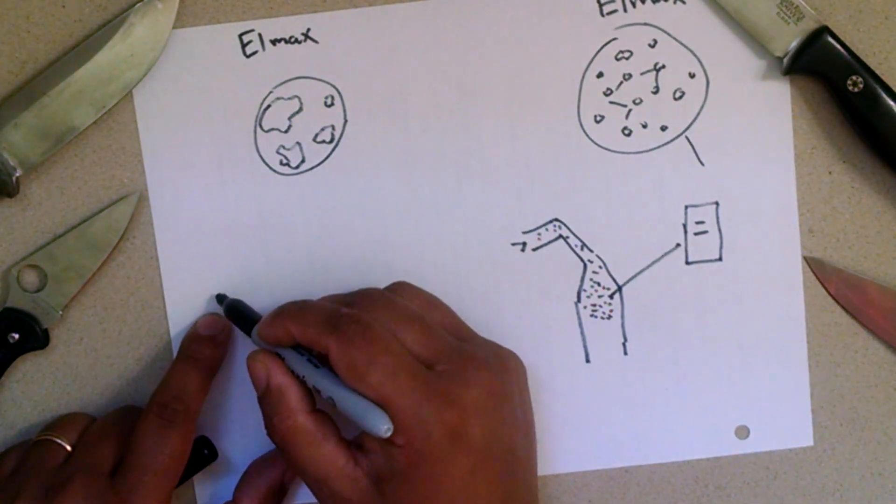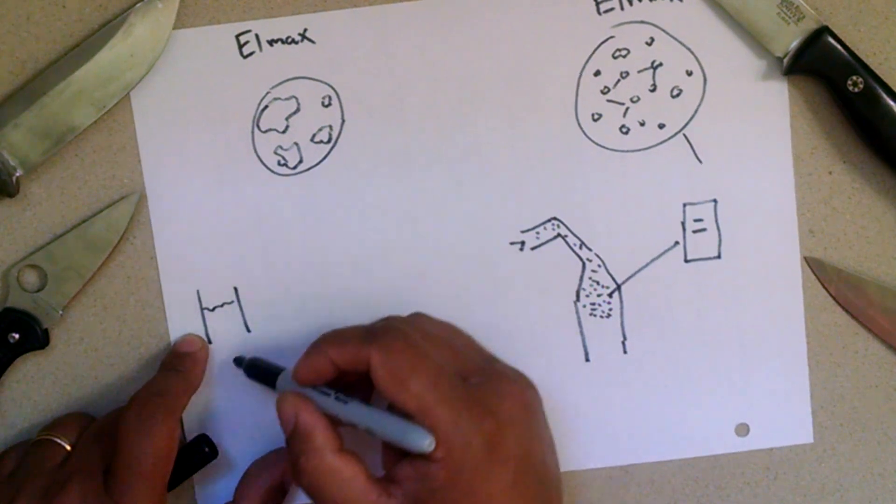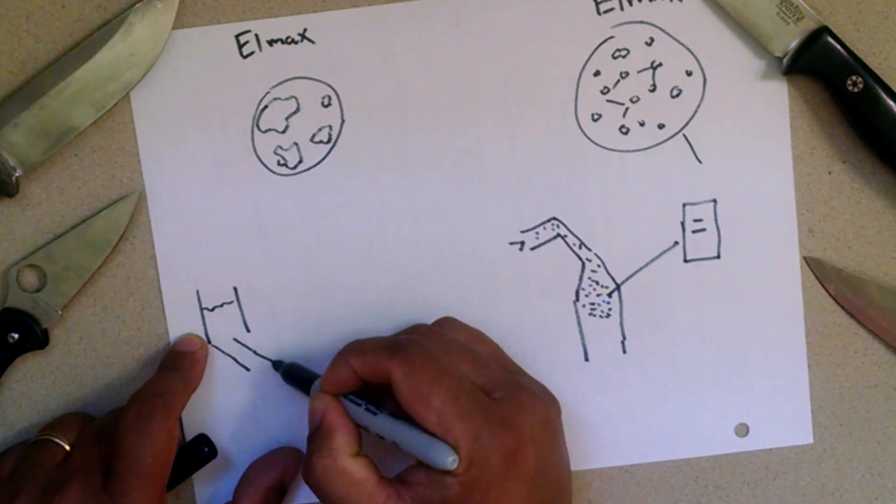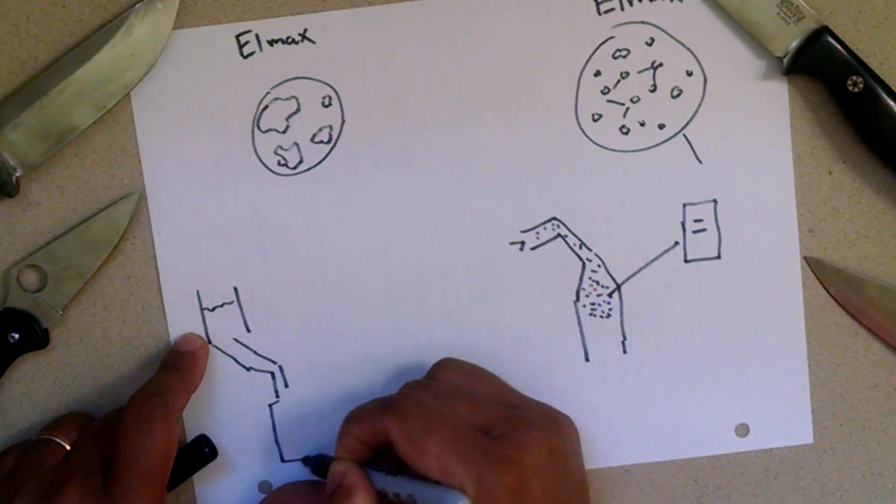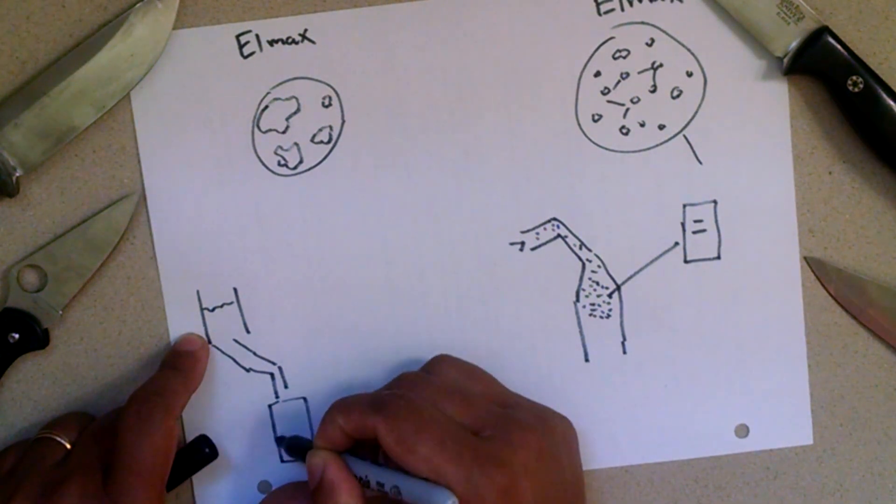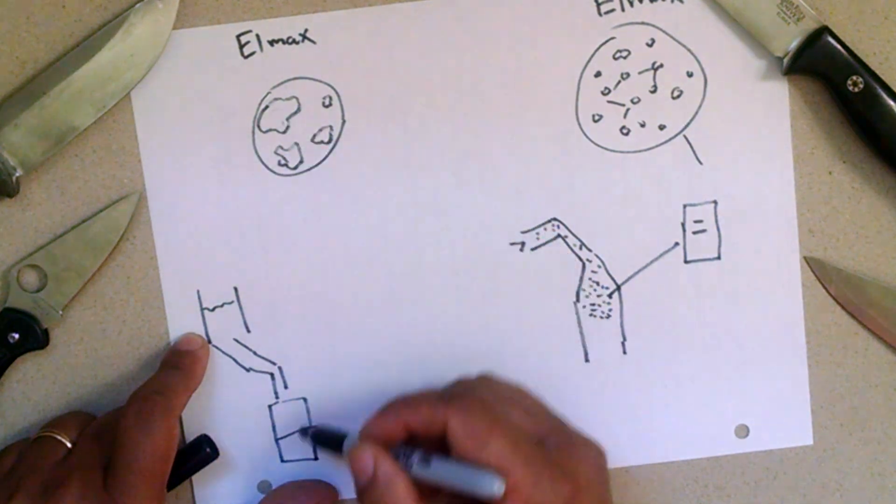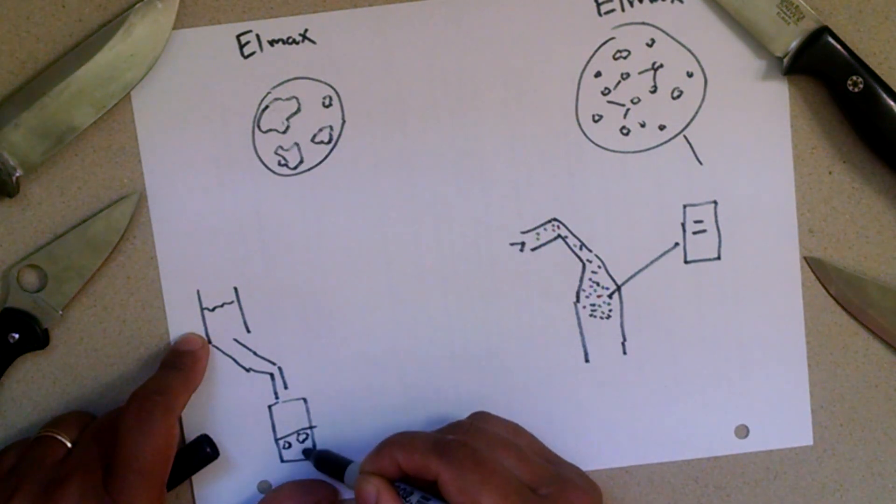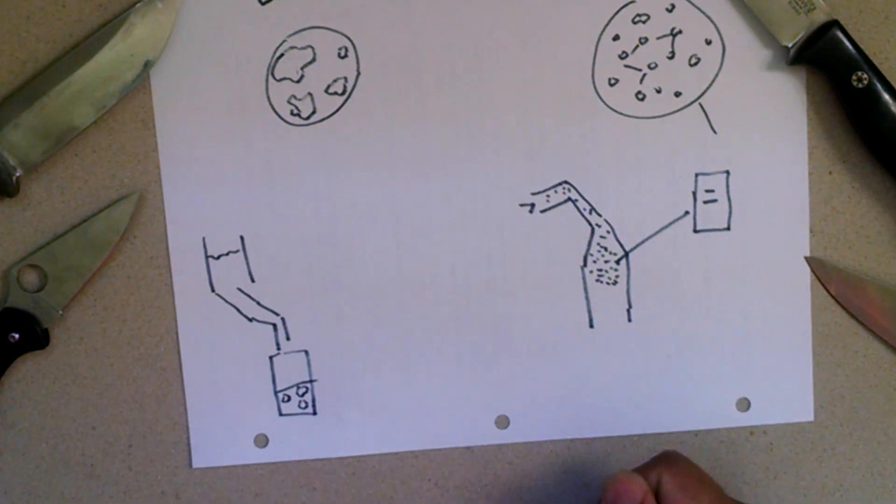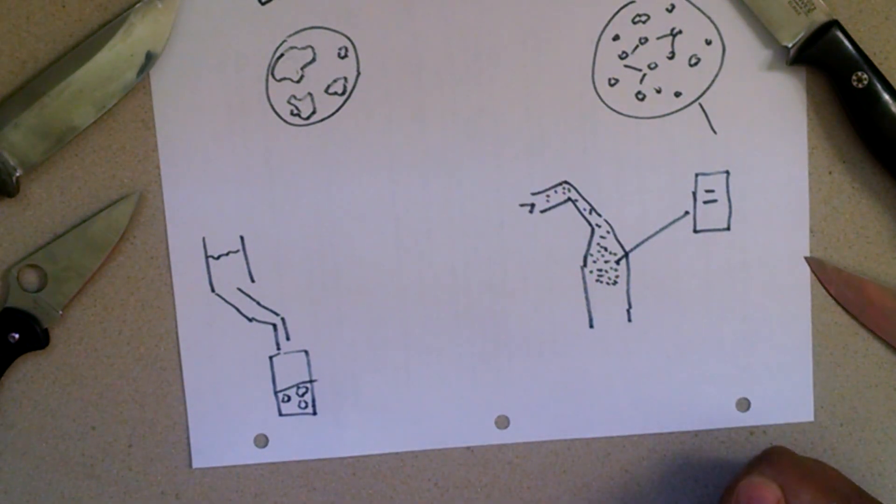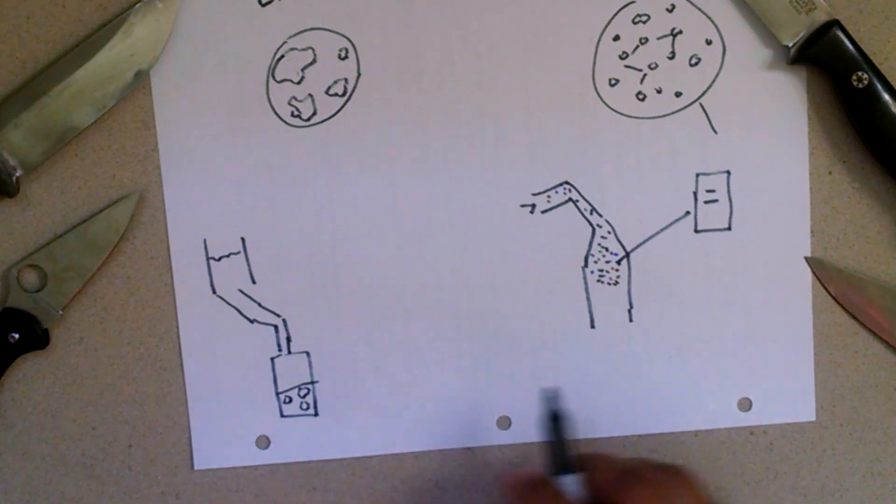Versus if we were just to pour the melted steel into an ingot, you would just have it start to kind of clump together like so. This is freaking brutal. Thanks for bearing with me, guys. It would basically just start to clump together in these huge clumps.